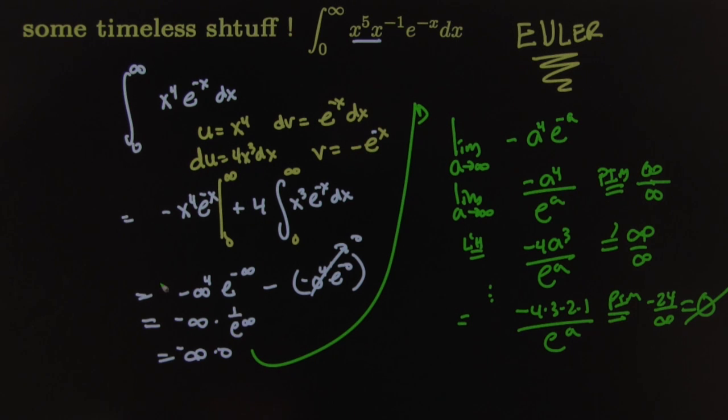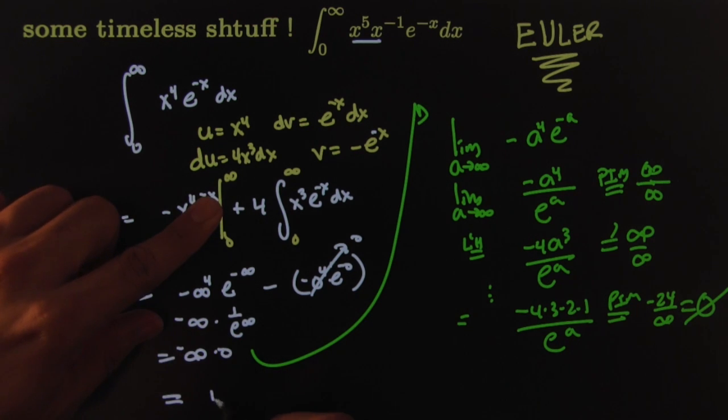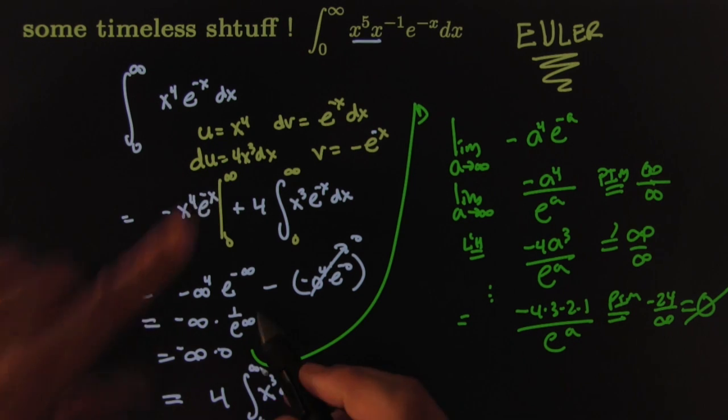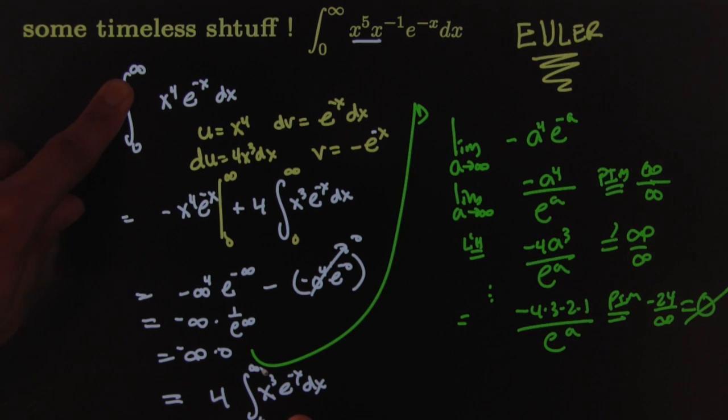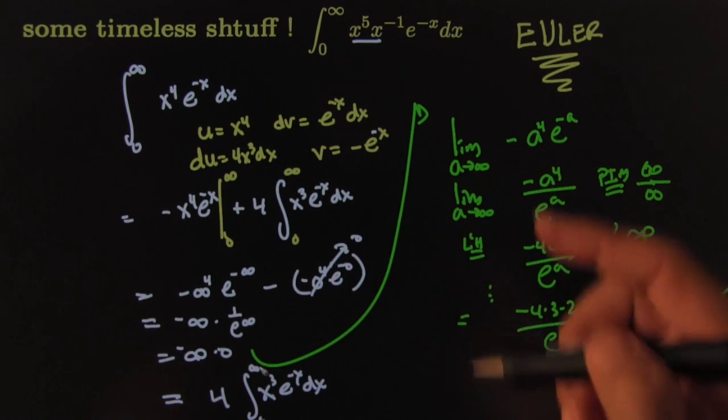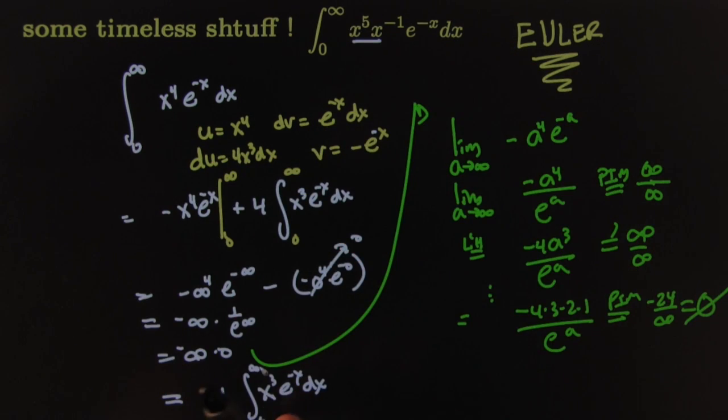And now I can reduce my integral here. Sometimes we'll just be happy reducing the integral. This becomes—let me see if I have room. Do we have room to write it here? We're going to make room. So this becomes, that becomes zero, so it just becomes four integral of x to the third e to the negative x dx as x goes from zero to infinity. This piece went to zero. So now look at this. Look what happened here.